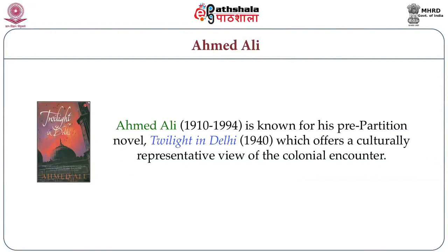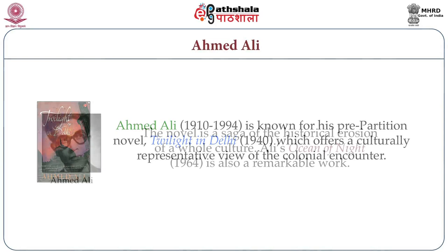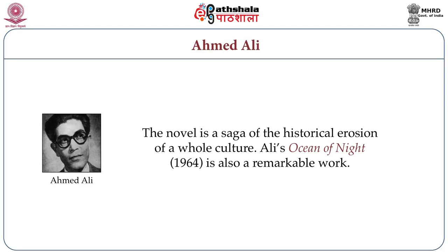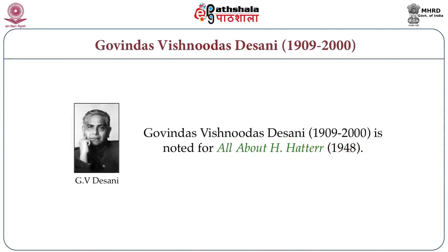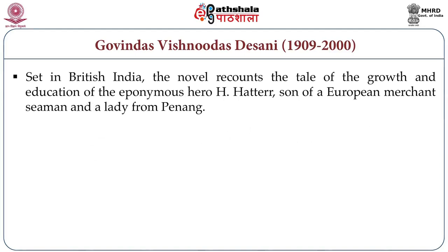Ahmed Ali, another writer who lived from 1910 to 1994, is known for his pre-partition novel Twilight in Delhi, published in 1940, which offers a culturally representative view of the colonial encounter. The novel is a saga of the historical erosion of a whole culture. Ali's Ocean of Night, published in 1964, is also a remarkable work. G.V. Desani, who lived from 1909 to 2000, is noted for All About H. Hatterr, published in 1948. Set in British India, the novel recounts the tale of the growth and education of the eponymous hero H. Hatterr, son of a European merchant seaman and a lady from Penang.